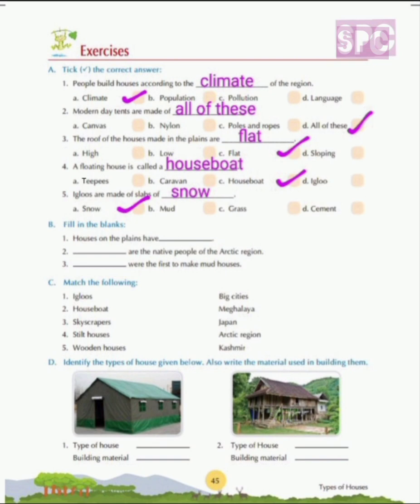Question 2: Modern day tents are made of dash — canvas, nylon, poles and ropes, or all of these. The answer is D, all of these. Question 3: The roof of the houses made in the plains are — high, low, flat, or sloping. The answer is C, flat. The roof of the houses made in the plains are flat.